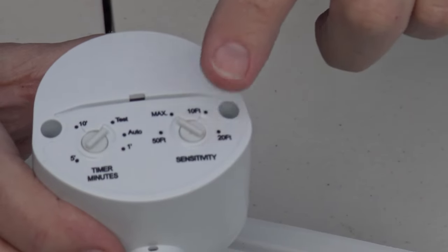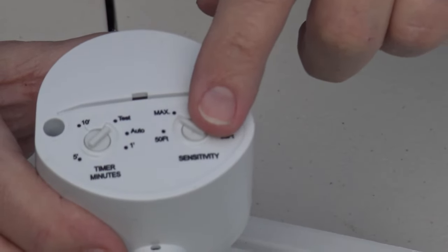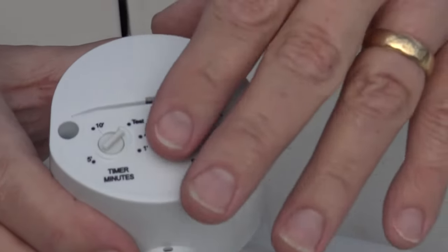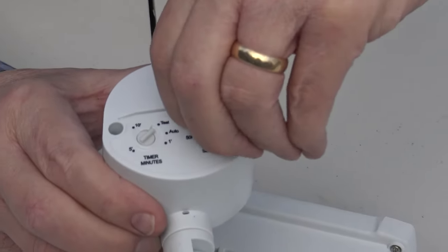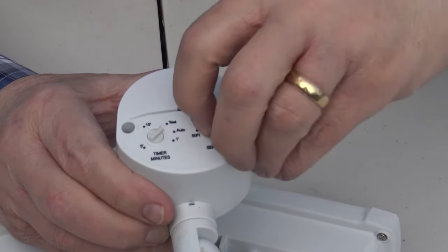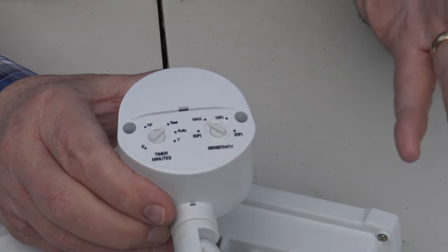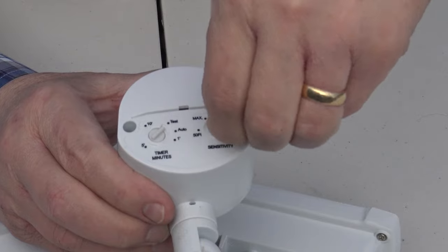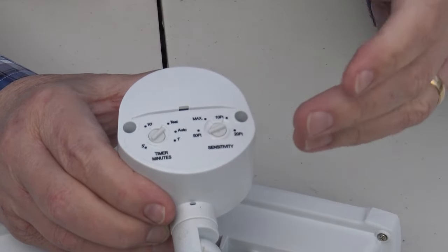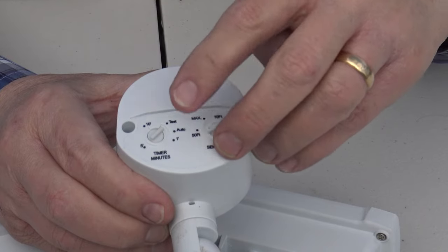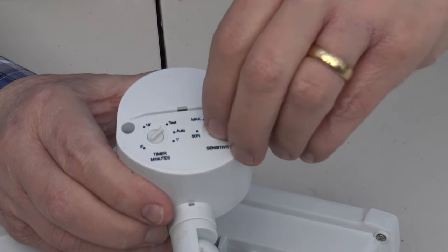Now keep in mind at 70 feet, you may get a lot of false positives out of this because you're really pressing the PIR to work at a really long distance. So there's any number of things that can cross into its path that may trigger it. Most people, unless they're trying to light up their entire backyard, if you're lighting up your driveway, you probably want to be at 50 feet or under. That works really well.